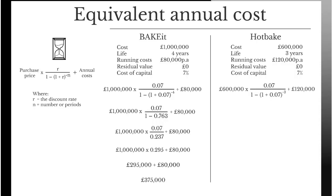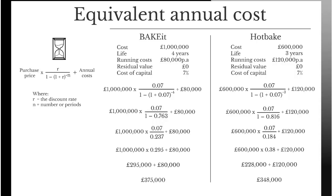Follow through the calculation. Once we've done the division, we've now got £1,000,000 multiplied by 0.295 plus £80,000, giving us an equivalent annual cost for the Bake It of £375,000. Repeat the process for the Hot Bake. The annual costs are different now, the purchase price is different, we've also got that different number of periods with the minus 3 rather than the minus 4. Follow through the calculation until we get to the end and we find the equivalent annual cost for the Hot Bake, which is £348,000.